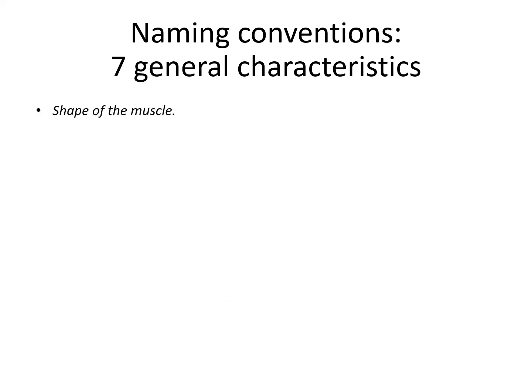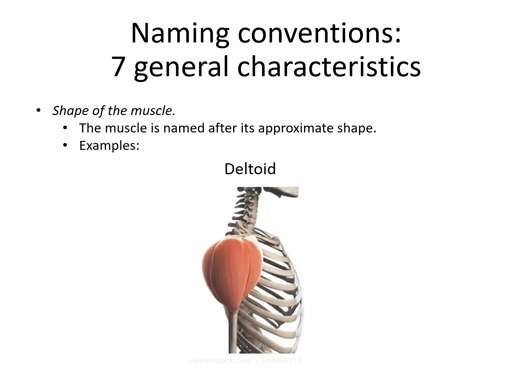The next characteristic is the shape of the muscle. Muscles can come in a great variety of different shapes depending on their function, and in this convention the muscle is named after its approximate shape. Some examples: the deltoid — if you look at the deltoid muscle, it is roughly triangle-shaped, and a delta is a Greek letter that looks like a triangle. Therefore the muscle is deltoid, meaning in the shape of a triangle.